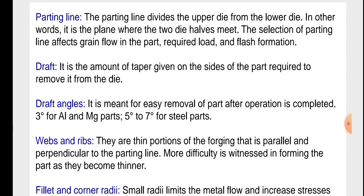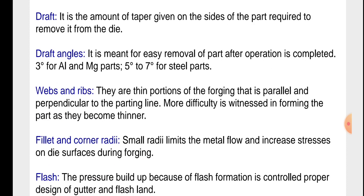Web and ribs are thin portions of the forging that are parallel and perpendicular to the parting line. More difficulty is witnessed in forming the part as they become thinner.